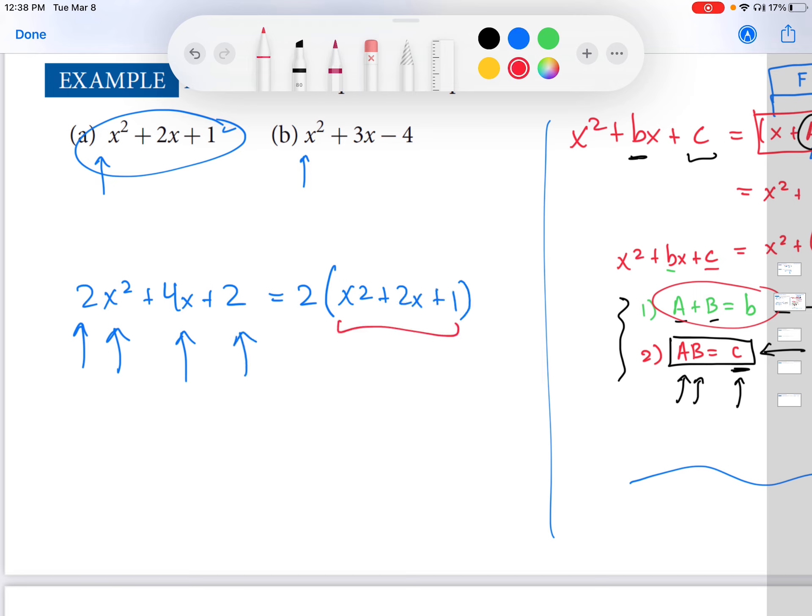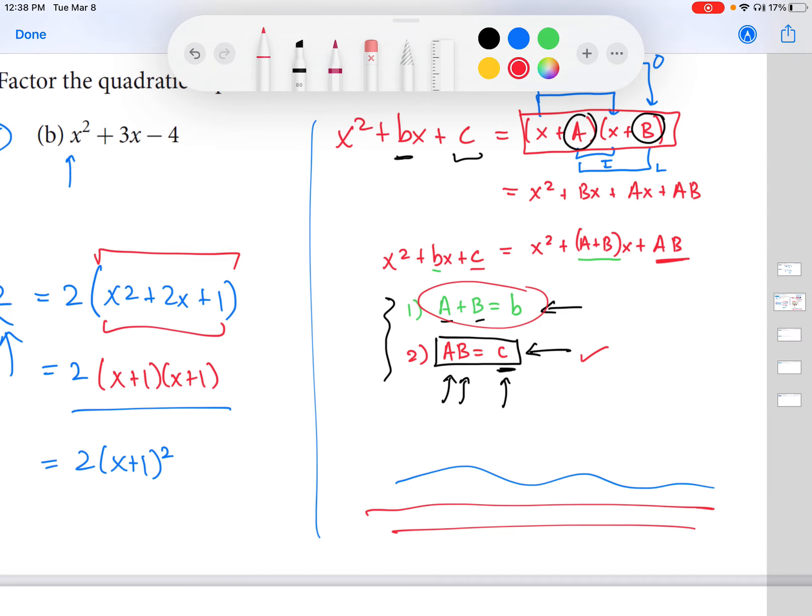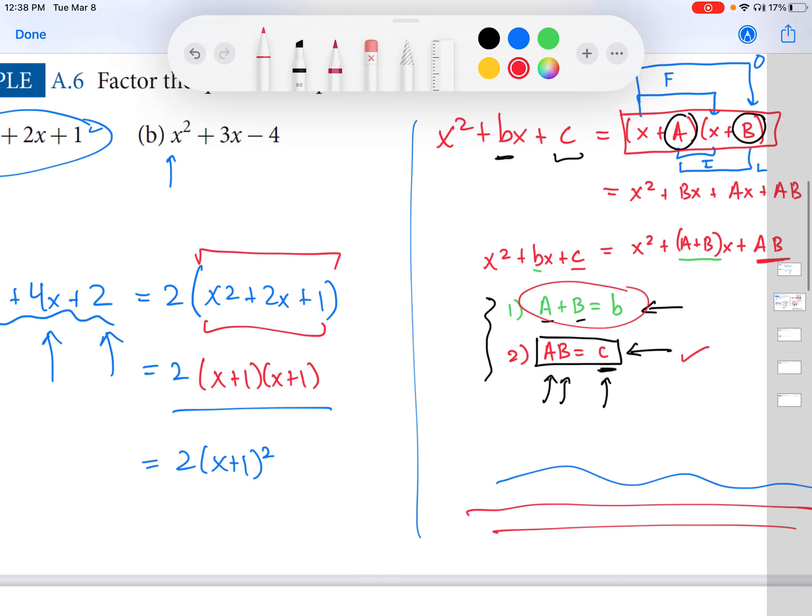Which, notice now that this is the exact same quadratic expression we just factored. And we factored that into x plus one times x plus one. So to factor this expression now, our answer would be this, which of course we can simplify into 2 times (x + 1) squared. So the point being that if you have a coefficient in front of x squared which is not one, you can easily factor this out. And then you will have a coefficient in front of x squared which is one. And you can then apply the procedure that we outlined over here.